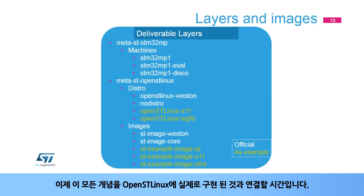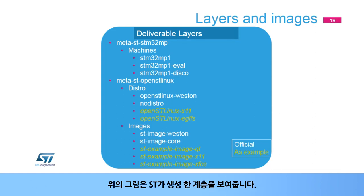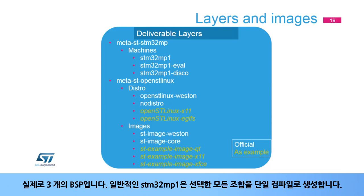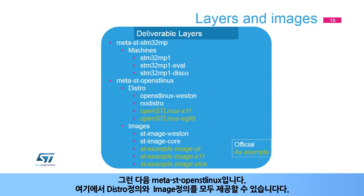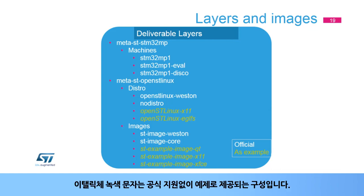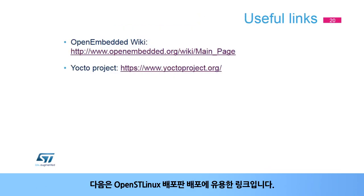It is time to connect all these concepts to what is actually implemented for OpenST Linux. The figure shows the layers created by ST. Meta-ST-STM32MP contains a BSP definition — actually three BSPs: a generic one STM32MP1 that generates all selected combinations in a single compilation (useful for testers), and two dedicated machines STM32MP1-Eval and STM32MP1-Disco for the eval and disco boards. Meta-ST-OpenST-Linux hosts both distro and image definitions. In white characters are the official offers; in italic green characters are configurations delivered as examples without official support. Here are useful links for the deployment of the OpenST distribution.